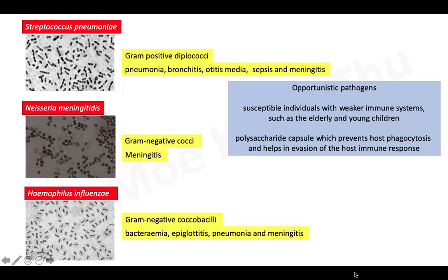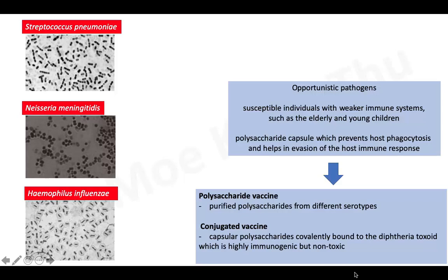To prevent these problems, we give vaccination to children and older adults. There are two types of vaccines for these pathogens: polysaccharide vaccine and conjugate vaccine. Polysaccharide vaccine is produced using purified polysaccharides from different serotypes. Conjugate vaccine is produced by covalent binding of capsular polysaccharides to carrier proteins such as diphtheria toxoid or tetanus toxoid, which are highly immunogenic but non-toxic.